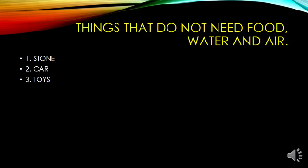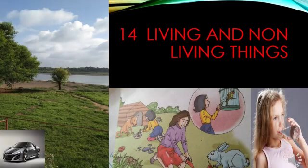Look here. First example: animals, plants, insects. These things need air and water to survive. So can we call them living beings? Yes, they are living. We can call them living beings. And stone, car, toys — they are known as non-living beings. Students, note examples of living things and non-living things. In this chapter, we will learn the difference between living and non-living things. So let's start our new chapter — Chapter 14: Living and Non-Living Things.